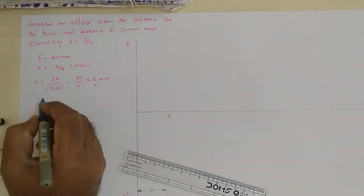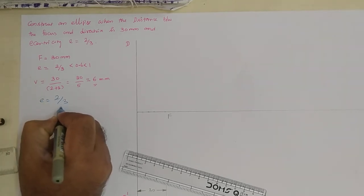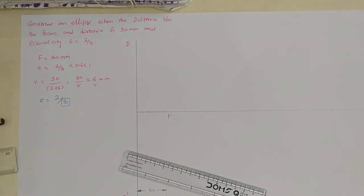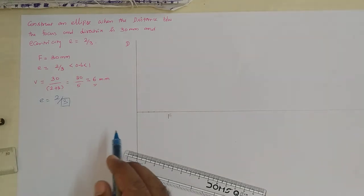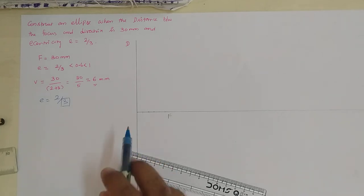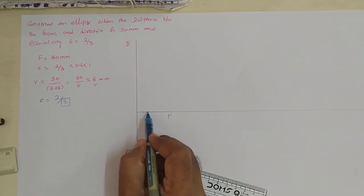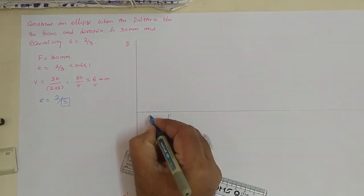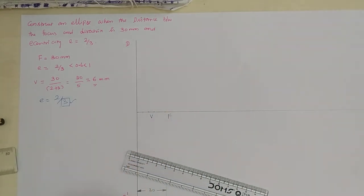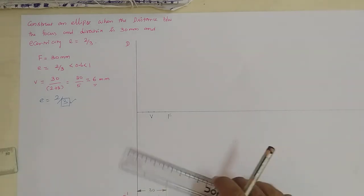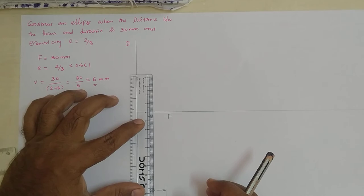Consider the denominator value given in the eccentricity. Eccentricity E equals 2 by 3, where the denominator is 3. Eccentricity is the ratio of the moving point from the focus divided by the moving point from the directrix. So from the directrix, counting 1, 2, and 3rd division gives us the vertex point V.